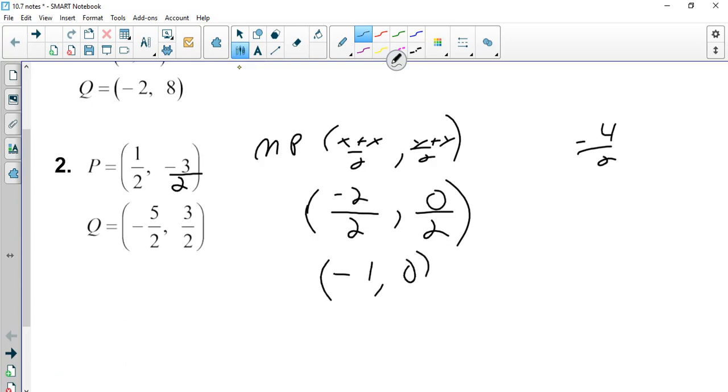And if you just think about it real quick, 1 half is halfway between 0 and 1, and negative 3 halves is negative 1 and a half. So that's about here. This is really not drawn to scale. So if I connected those two, pretty close to negative 1, 0. That's just a rough sketch, but that shows you where the midpoint would be.